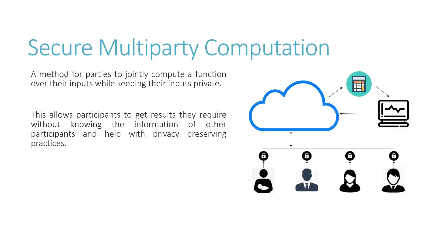The second technique is secure multi-party computation. It is a method for parties to jointly compute a function over their inputs while keeping those inputs private. This allows participants to get results they require without knowing the information of other participants and helps with privacy-preserving practices.